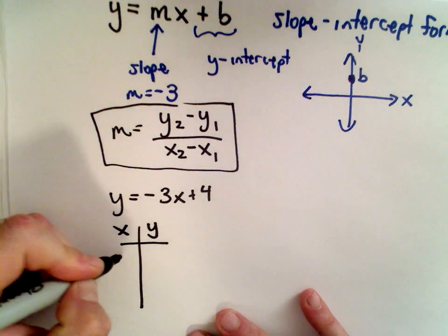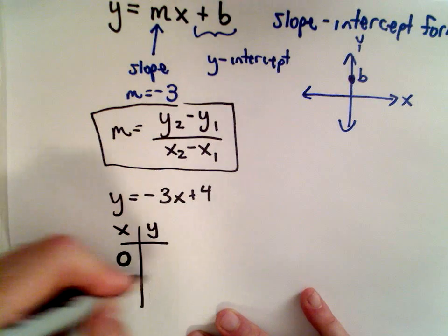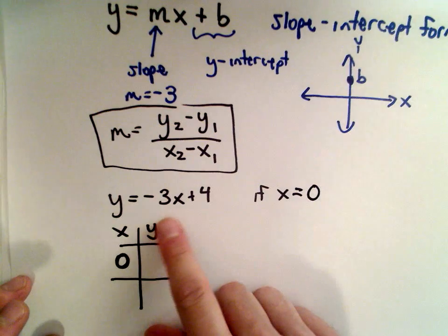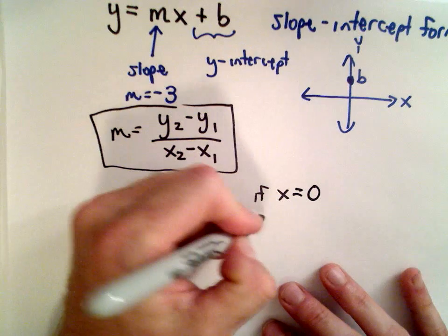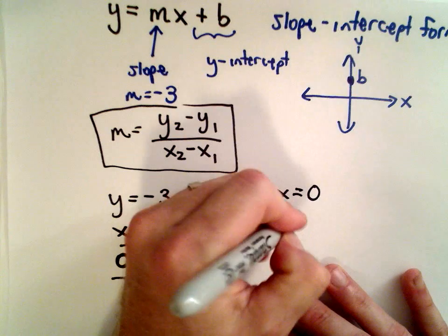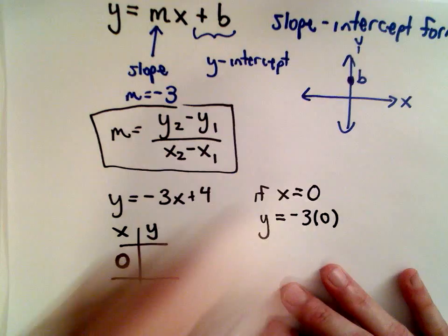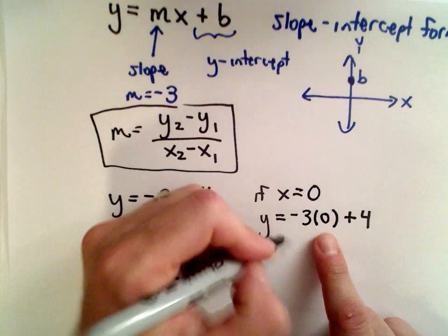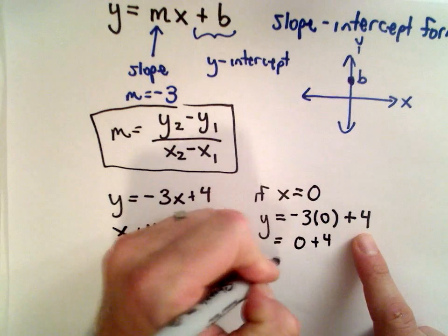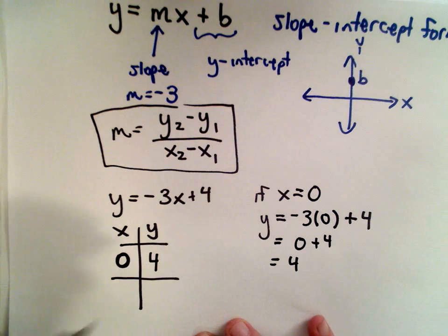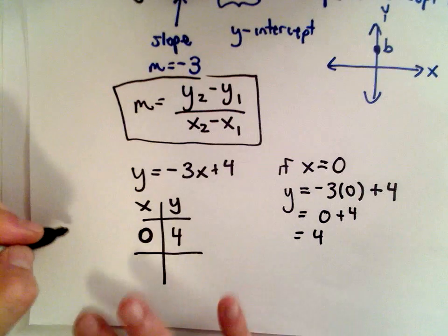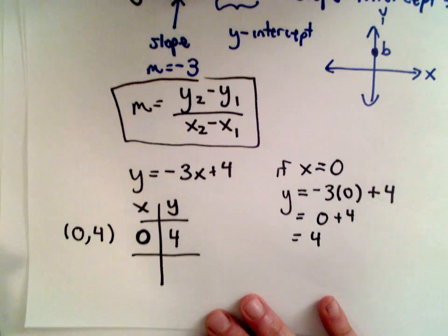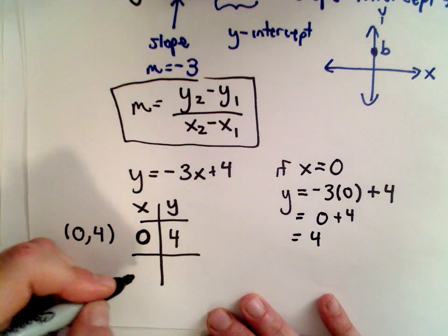Suppose I use, let's use 0 for a value of x. I like to use 0 because it makes the arithmetic easy. So if we let x equal 0, I'm just going to substitute it into my formula and get a y value. So we'll have y equals negative 3 multiplied by 0 plus 4. Well, anything multiplied by 0 is 0. So negative 3 multiplied by 0 is going to be 0 plus 4, which is 4. So if x equals 0, y equals 4, that means the point 0 comma 4 is going to be a point on our line.